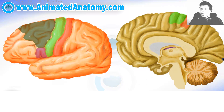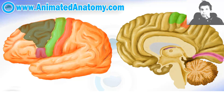Here we have the calcarine fissure and the cortex around it is the primary visual cortex. It is important for receiving the signal from your eyes. However, the area that is important for perception, understanding what is seen, and remembering what was seen before, is not the primary visual cortex.